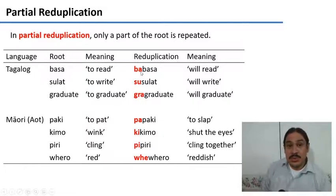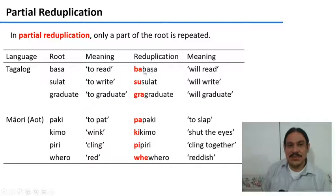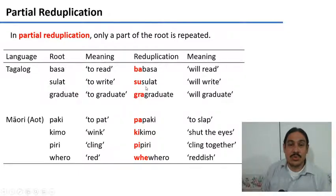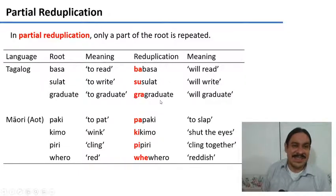The future form of the verb is formed by reduplicating the first syllable of the root. So 'will read' is 'babasa', 'will write' is 'susulat', and 'will graduate' is 'gra-graduate'.